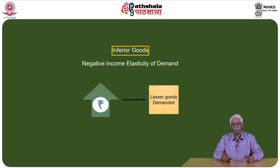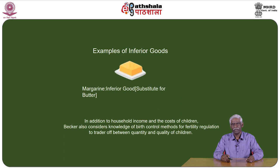Inferior goods have a negative income elasticity of demand — as consumers' income rises, they buy less of the inferior good. A typical example is margarine, which is much cheaper than butter. In addition to household income and the cost of children, Becker also considers knowledge of birth control methods for fertility regulation and the trade-off between quantity and quality of children.